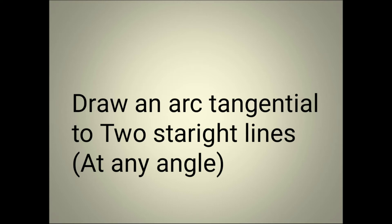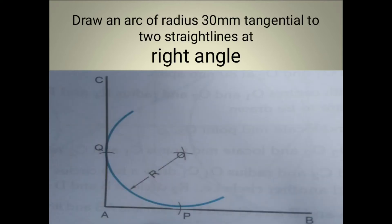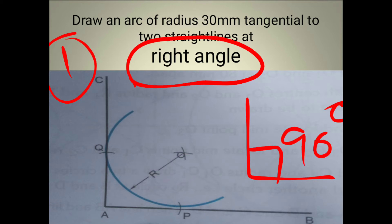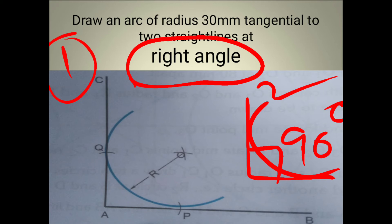Coming to Model Number One: the two straight lines have an angle of 90 degrees. Model Number One — draw an arc of radius 30 mm tangential to two straight lines at right angle. That means the two straight lines are arranged at a right angle: this is line number one, line number two. We need to draw a tangential arc that touches these two lines — that is called a tangential arc.